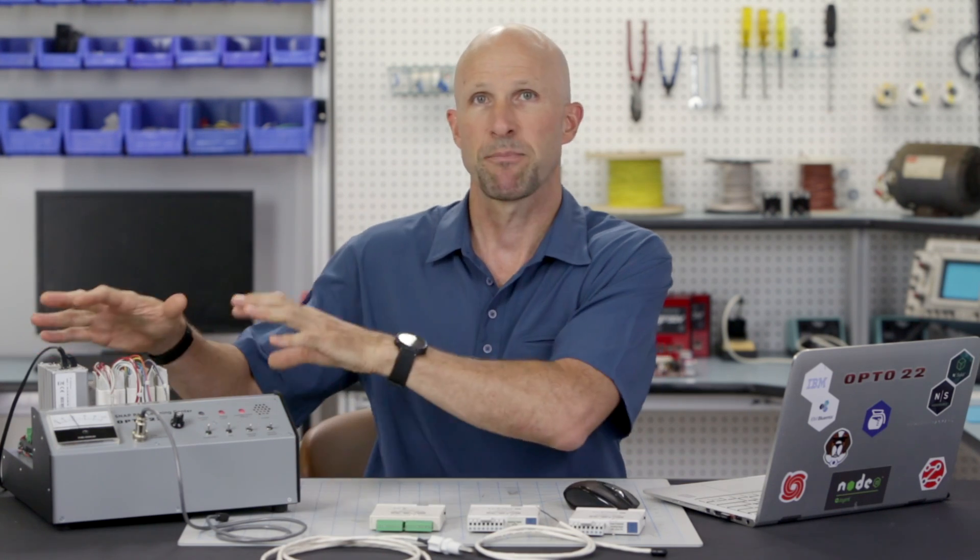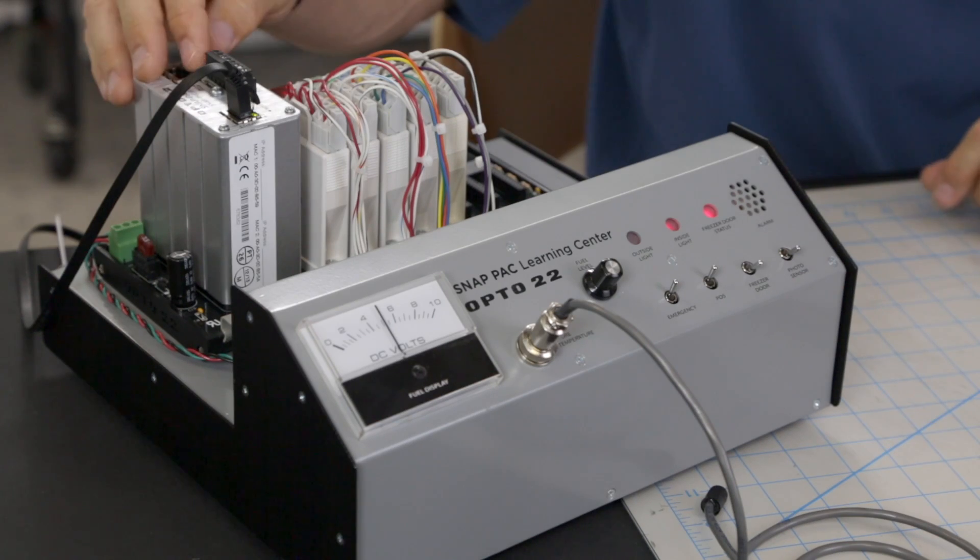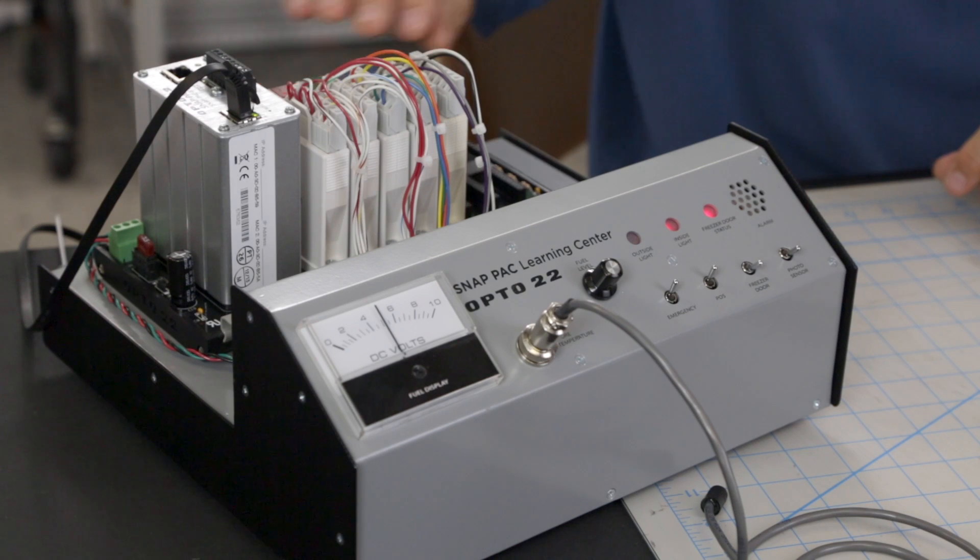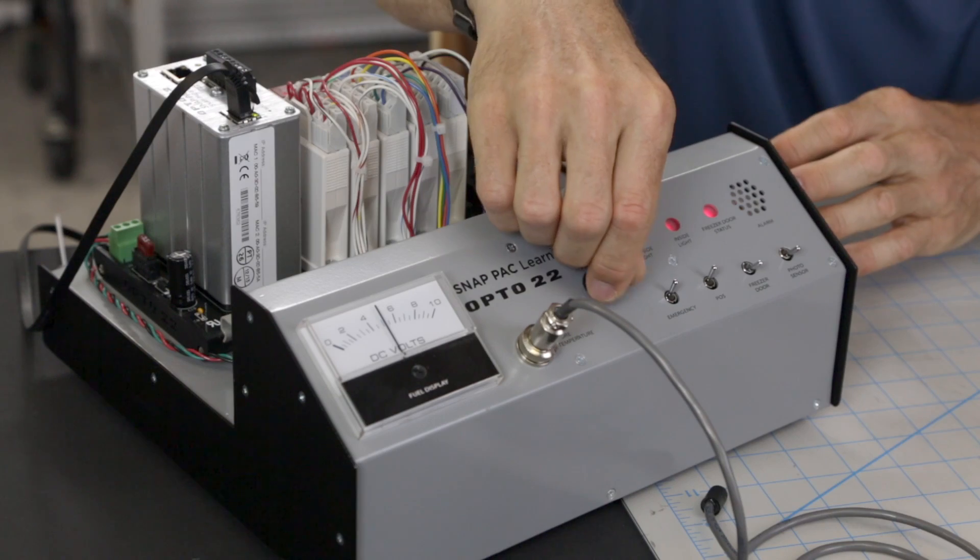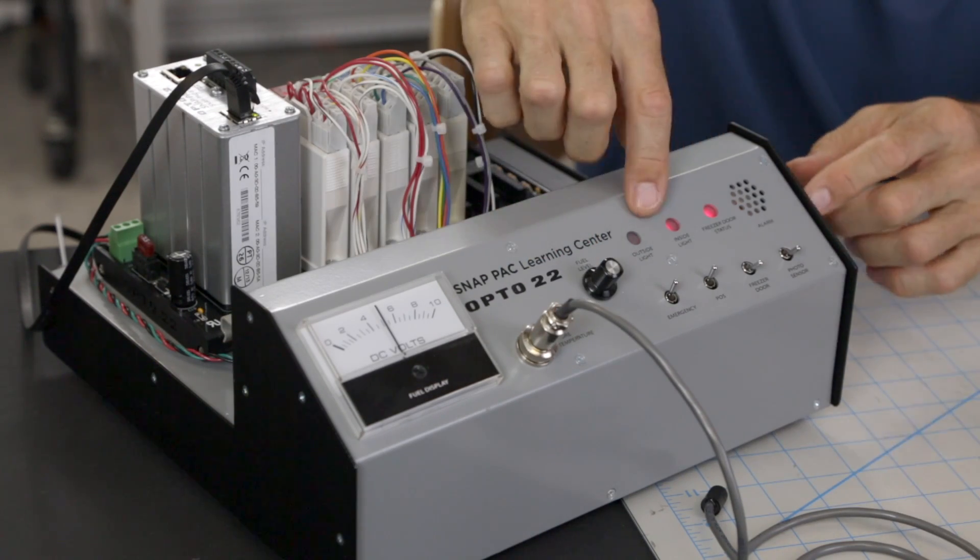Now for this workshop I'll be using this SNAP PAC Learning Center. It's basically a SNAP PAC system with a controller, several IO modules, and a rack, and we use it for training here at Opto 22. This panel simulates some typical IO signals like a meter, potentiometer, temperature sensor, LEDs, and switches.